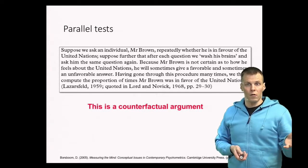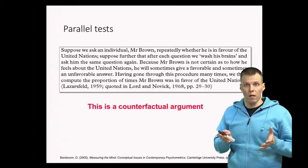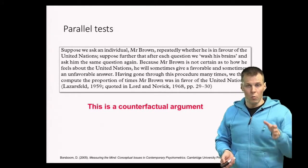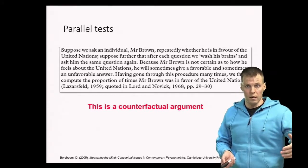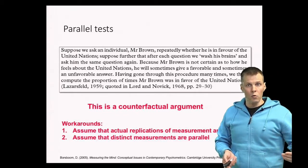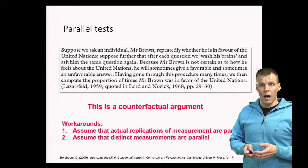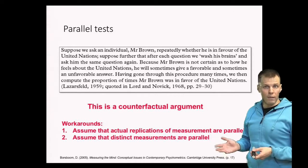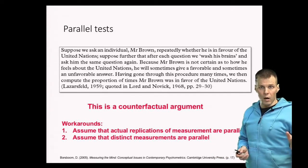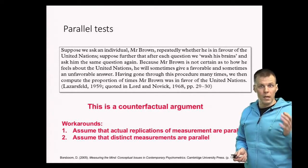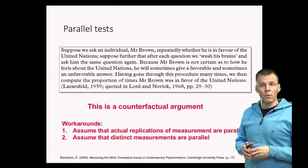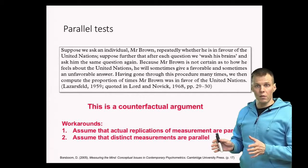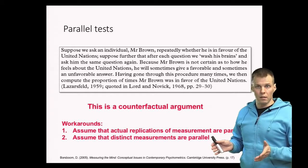There are two workarounds for the problem that we cannot conduct true parallel tests — that is, test the same attribute of the same person at the same occasion without the person having any recollection of being tested before. The first way is to do actual replications and assume they are parallel, which works if we have a time delay. For example, if we ask a person now whether they like the United Nations and ask them the same question a week later, they may not remember the original answer, in which case those repeated measures mimic the parallel tests scenario.